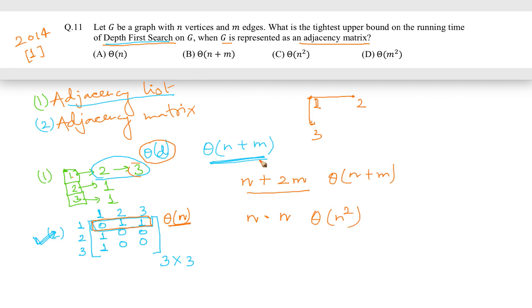So in this case, depth first search is going to take theta(n squared) time. Therefore, the answer is C.